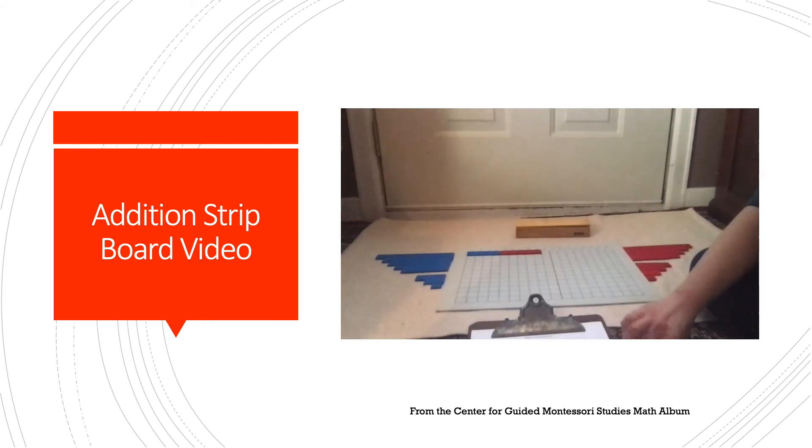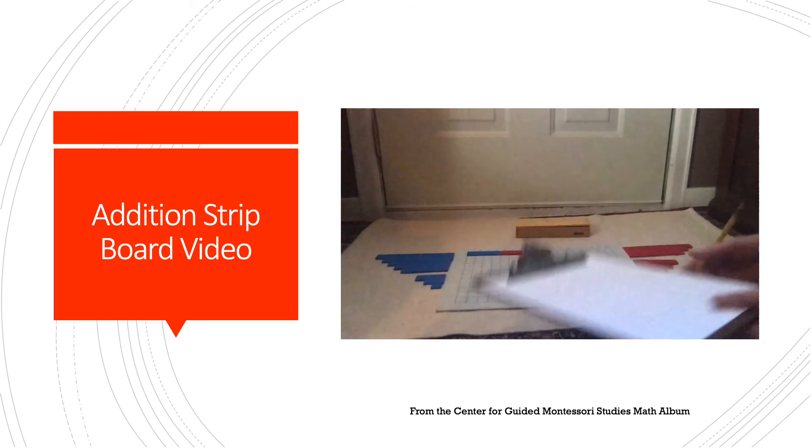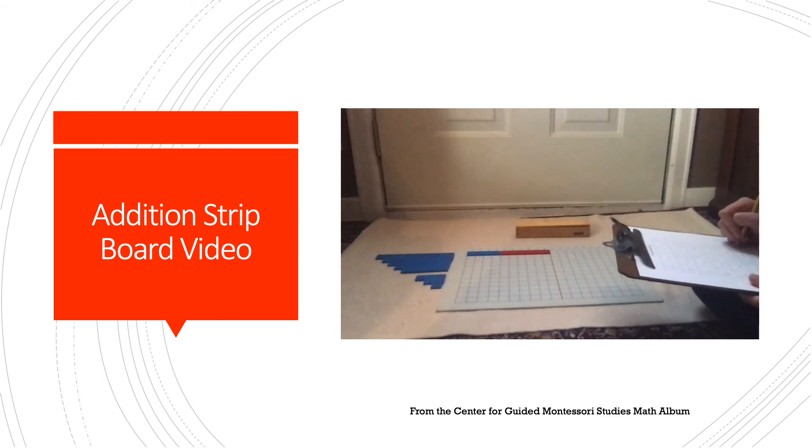Four plus six. Four, five, six, seven, eight, nine, ten. I notice that the red strip now touches the red line in the middle of the board. So four plus six equals ten.